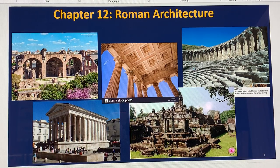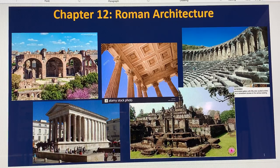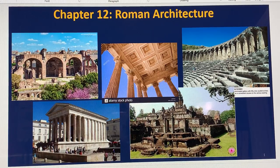Good morning, students. Architecture 112. Today we will discuss chapter 12, Roman Architecture. We have many examples for this chapter, so I think it's a little bit longer if you compare with another chapter. However, I tried my best to show you the impressive points from this chapter. We can start right now.